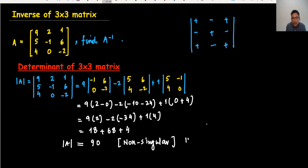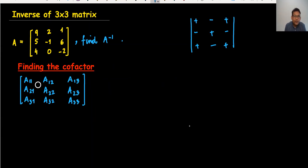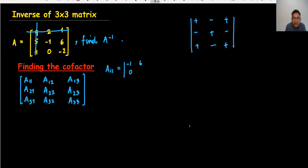So we write: inverse is possible. Let's move to the second part to find the cofactor. To find A11 — 1,1 means first row, first column — I have to cancel out that row and that column. This position has a positive sign. So the remaining 2 by 2 entries are minus 1, 0, 6, and 2.